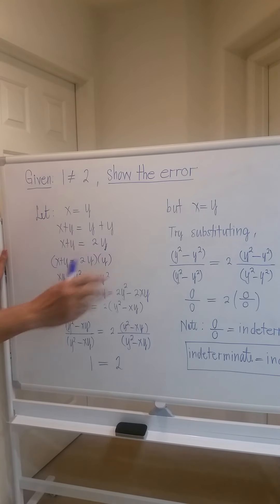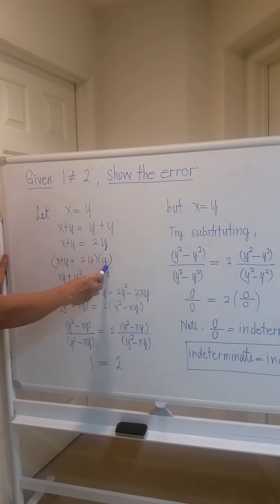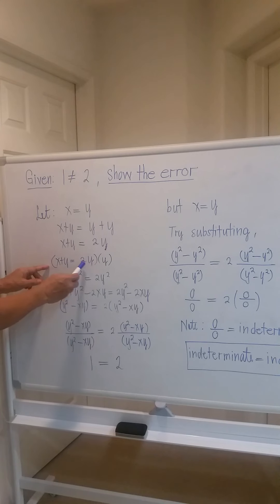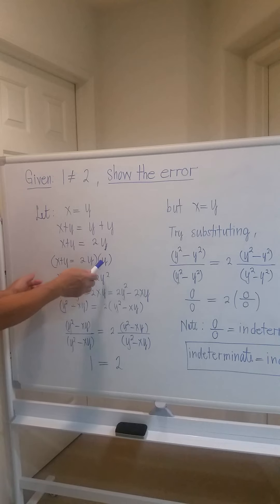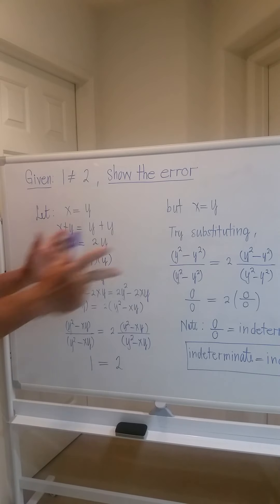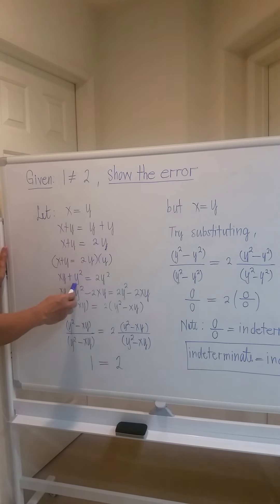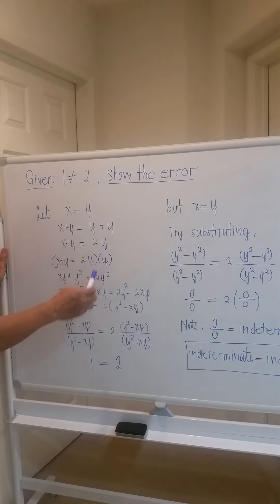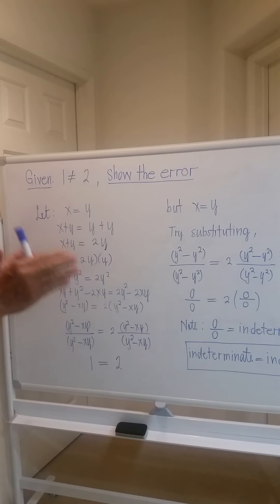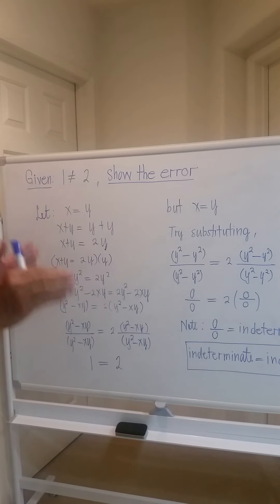The next procedure is we multiply both sides by y again. So x plus y equals 2y times y — meaning the whole equation will be multiplied by y. Try to expand: x times y is xy, y times y is y squared, equal to 2y times y which is 2y squared. That's still fine — if you multiply both sides by the same quantity, there's no violation.